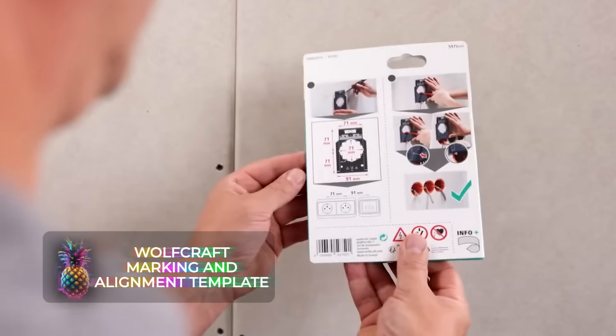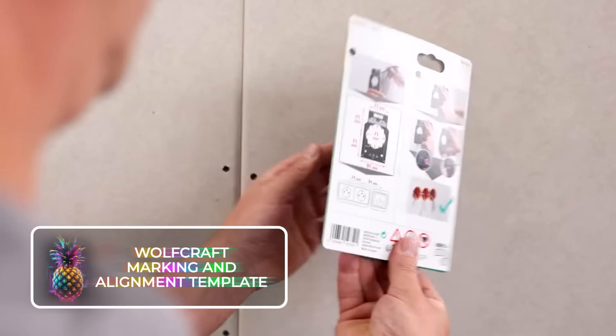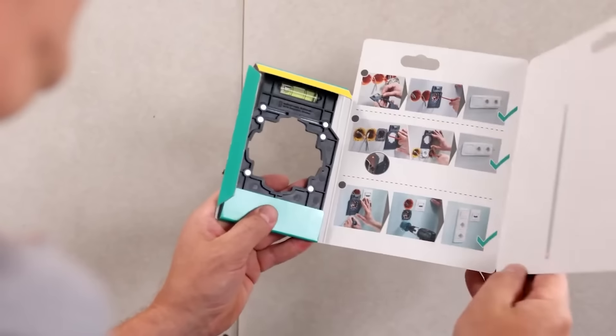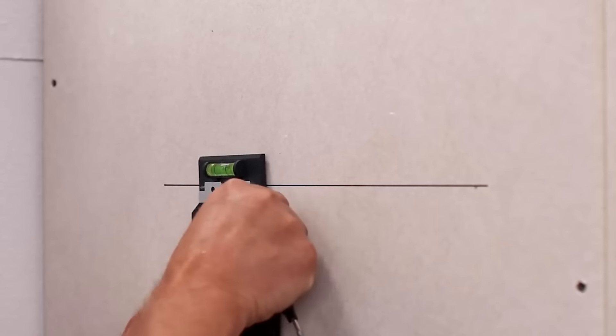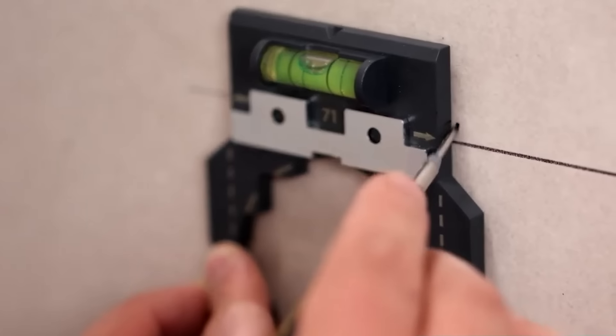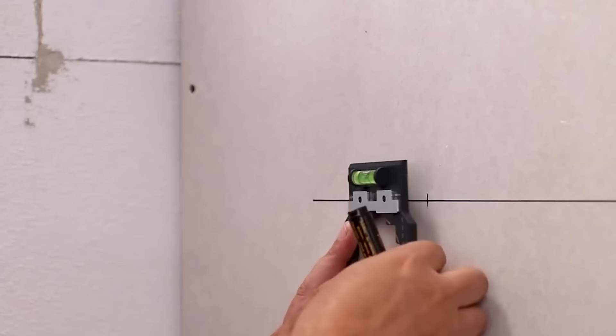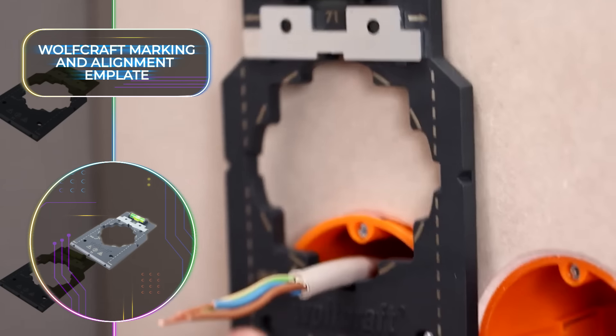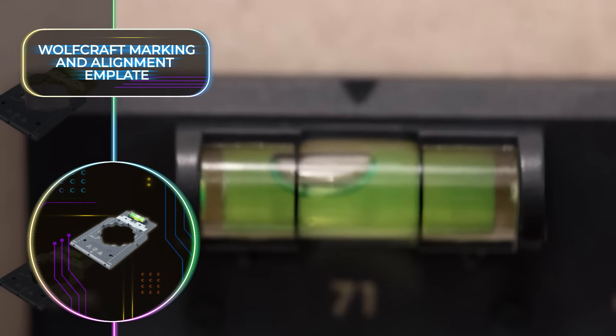Wolfcraft Marking and Alignment Template. For the fastest, most effortless installation of switches and sockets in drywall that you will probably ever experience, use the new Wolfcraft template tool. Thanks to its durable plastic build, this handy and trustworthy tool for tidy switch and socket installations will stick with you through plenty of projects. It boasts a removable steel stand and magnets on the back which will secure it firmly in place during use.